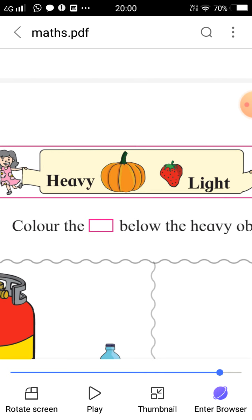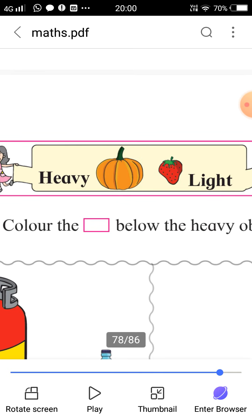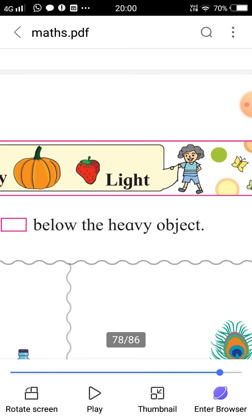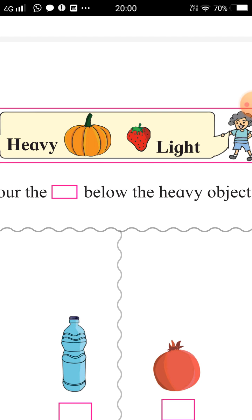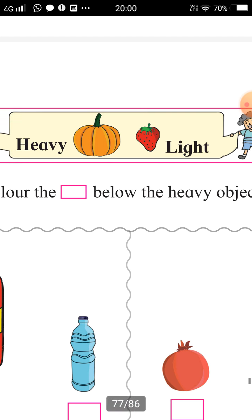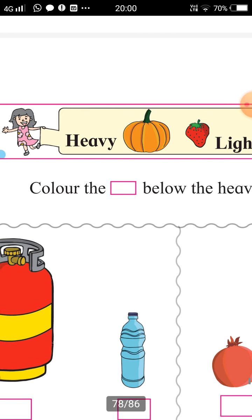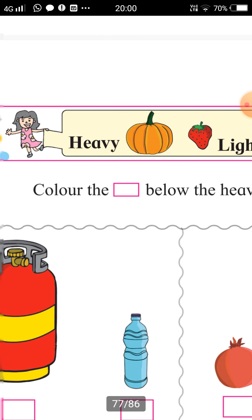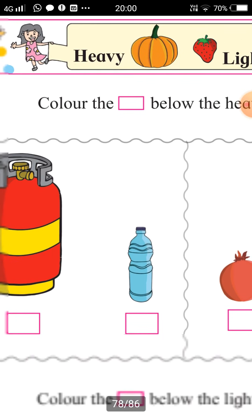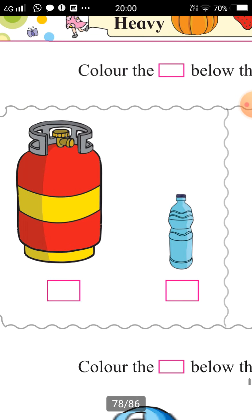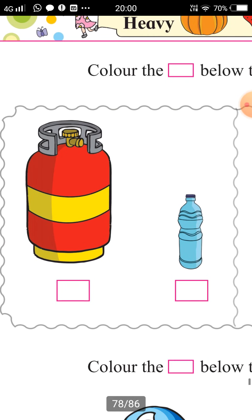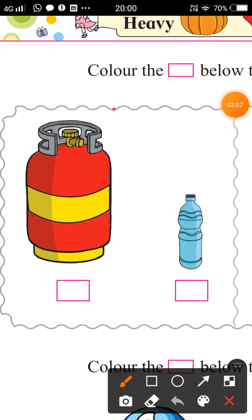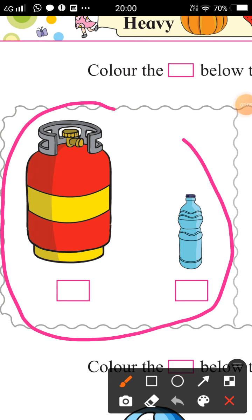What is the instruction given here? Color the empty box, or color the box below the heavy object. Whichever object is heavy, that object's box below, you should color. Look at this first picture. Here it is two objects.